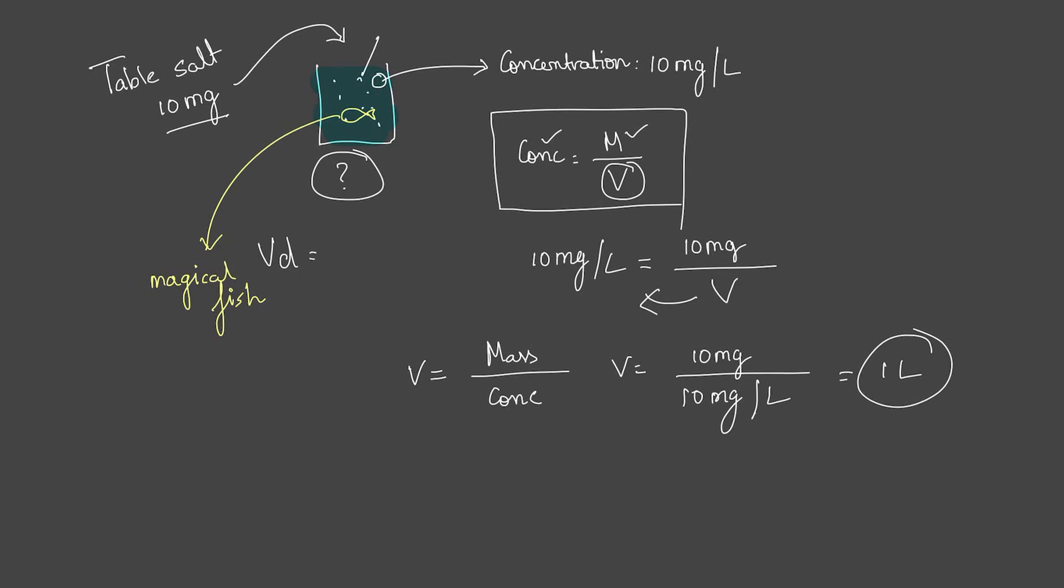Now what this does is that the moment you put 10 milligrams and you stir it, this fish eats some of it. And then when you try to take the concentration, you get lower concentration because it has already eaten some. So instead of 10 milligrams per liter which you initially got, let's say you get 5 milligrams per liter. And you happily assume that that's the real concentration and you go on to find 10 milligrams divided by 5 milligrams per liter, which is 2 liters. So you estimate the volume of distribution as 2 liters here.